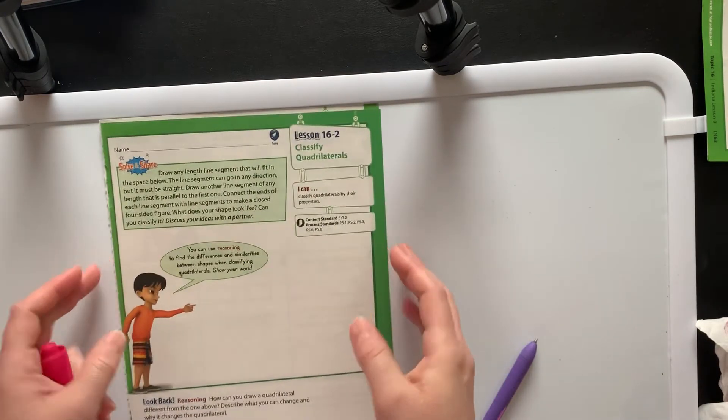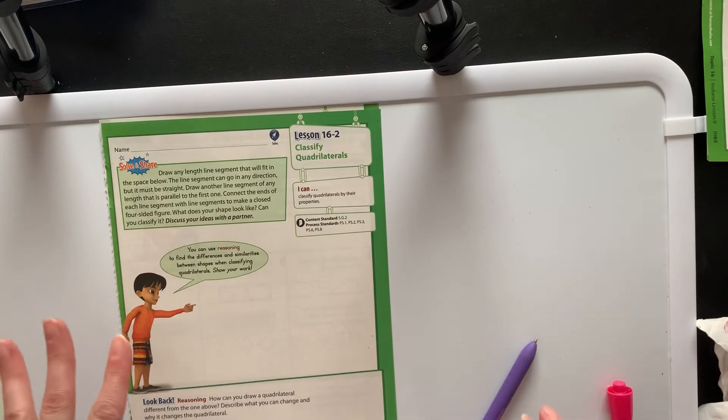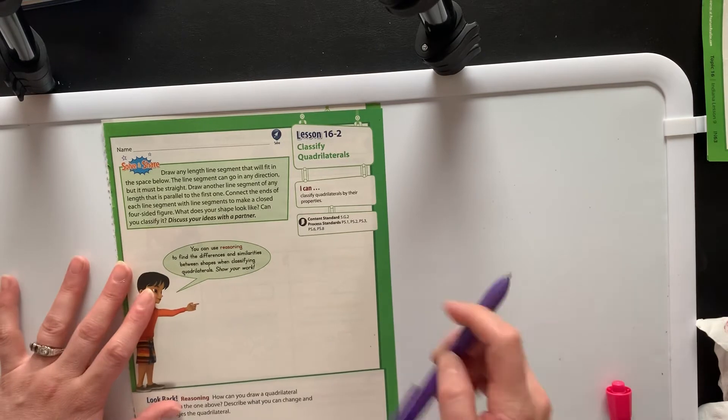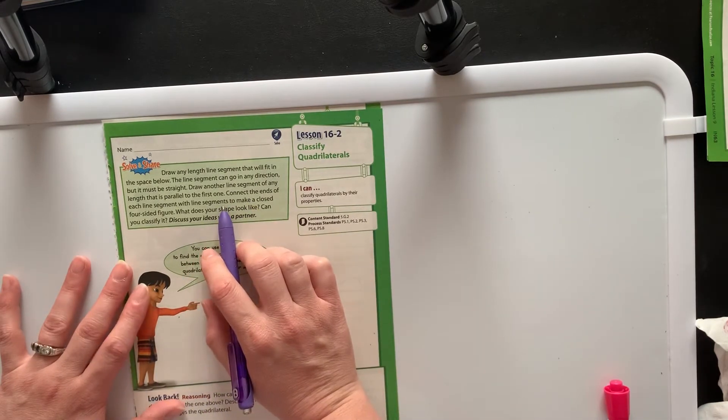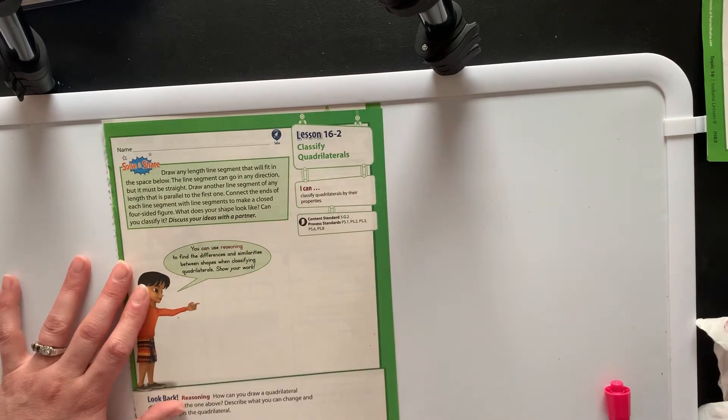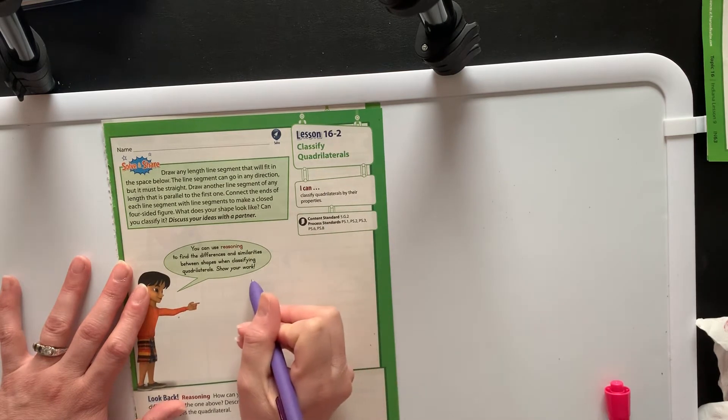It says here: draw any length of line segment that will fit in the space below. The line segment can go in any direction but it must be straight. Draw another line segment parallel to the first one, connect the ends of the line segment to make a closed four-sided figure. What does your shape look like?